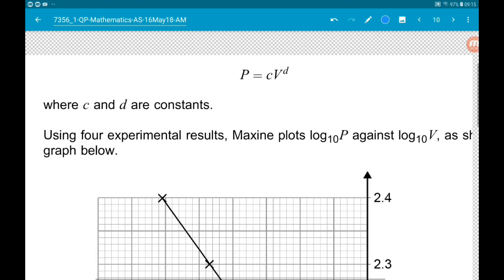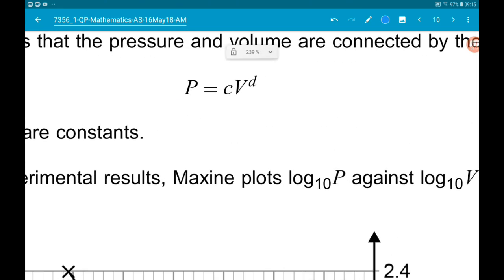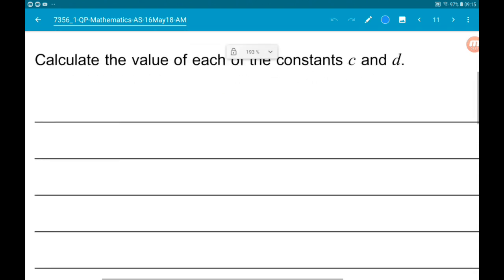So what we do is we use the model first of all, and we're going to use logarithms to turn this model into the form that our graph is in. So first step: P is cV to the power d.